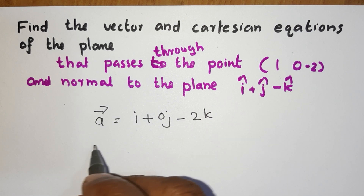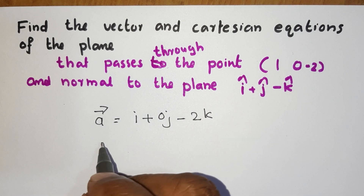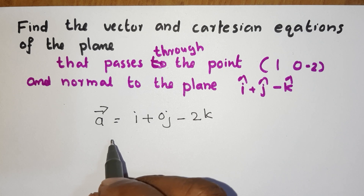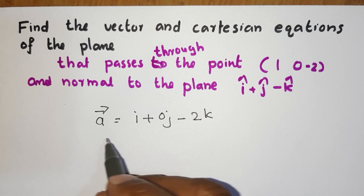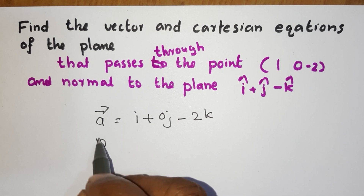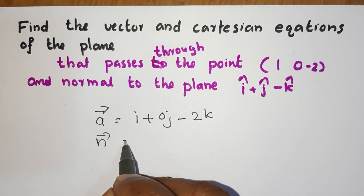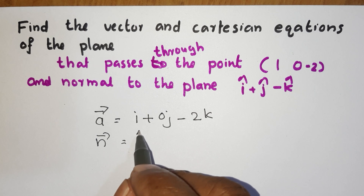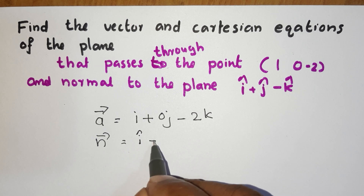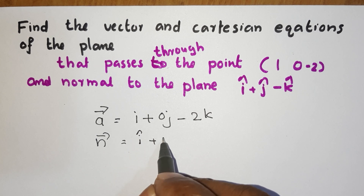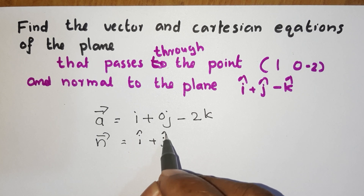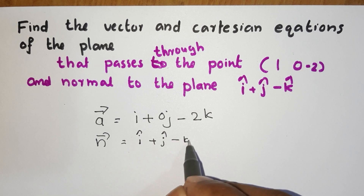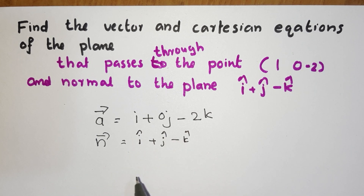The normal vector n is i plus j minus k. This is the normal vector.